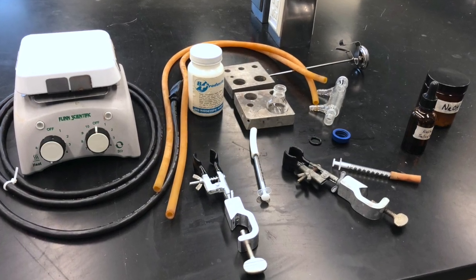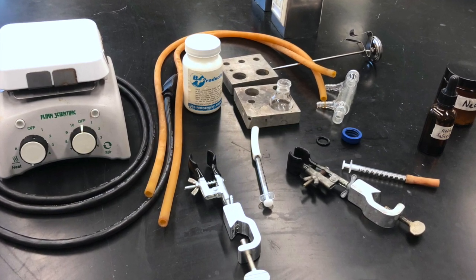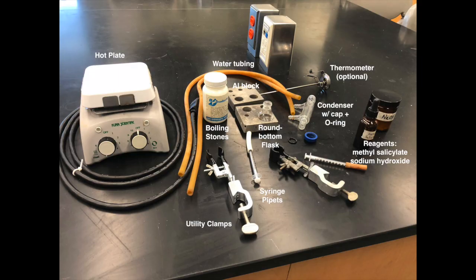Here you see all of the equipment and chemicals that we will be using in this experiment. From left to right we have the hot plate with power cord, and the flexible Tigon tubing used for carrying water to and from the condenser.